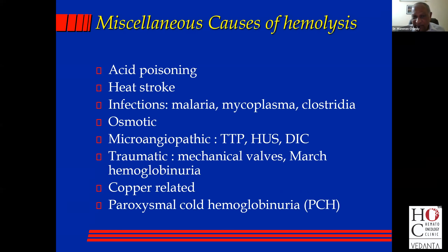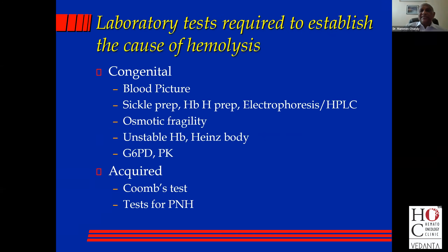Microangiopathy, where the red cells are cut, as in TTP, HUS, or DIC. Traumatic, where you have a valve. Copper sulfate poisoning — a common agricultural poisoning. And rarely, a disease we don't see nowadays because there's no syphilis, is paroxysmal cold hemoglobinuria. So this tells you the congenital causes and how you approach your blood picture — you do a sickle prep, electrophoresis, osmotic fragility, check for unstable hemoglobin with a Heinz body preparation, and do a red cell enzyme assay. That more or less covers evaluation of congenital hemolytic anemia.